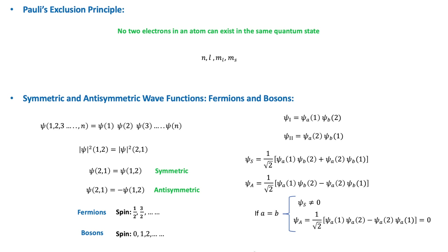No two electrons can be in the same quantum state. Pauli arrived at this principle by studying atomic spectra, in which he found that in the spectra of elements there are no transitions that would correspond to a state in which both electron spins have the same direction — so both would have the same MS. But transitions were observed in which the spins have opposite directions. Pauli's exclusion principle determines how electrons in a common force field are distributed among the different quantum states.